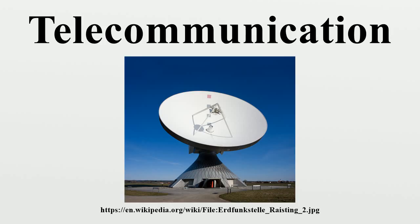Sometimes telecommunication systems are duplex, with a single box of electronics working as both a transmitter and a receiver, or a transceiver. For example, a cellular telephone is a transceiver. The transmission electronics and the receiver electronics in a transceiver are actually quite independent of each other. Radio transmitters contain power amplifiers that operate with electrical powers measured in watts or kilowatts, but radio receivers deal with radio powers measured in microwatts or nanowatts. Hence, transceivers have to be carefully designed and built to isolate their high-power circuitry and their low-power circuitry from each other.